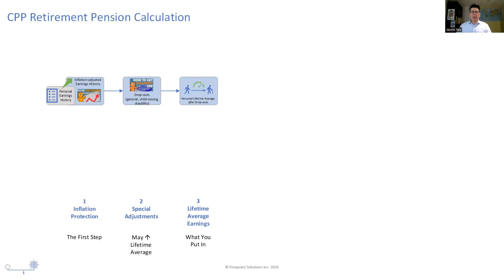The fourth step is to apply the earnings replacement rate to your lifetime average earnings. The earnings replacement rate is the proportion of your lifetime average earnings that the CPP is designed to provide to you as a retirement pension. The original CPP program is designed to provide a retirement pension that is 25% of your lifetime average earnings.